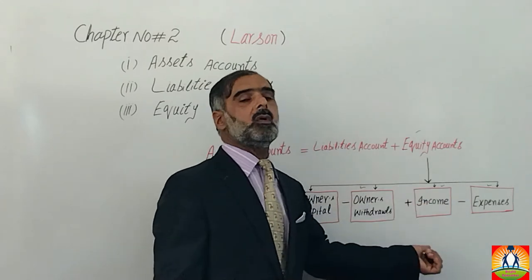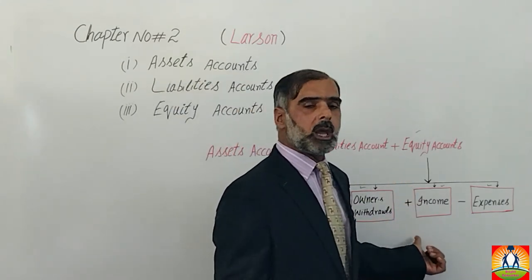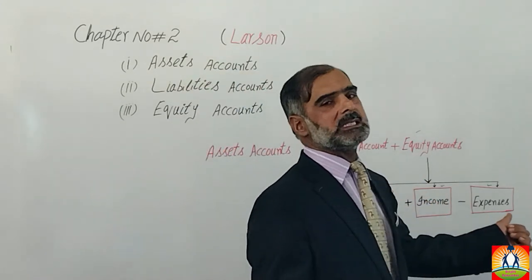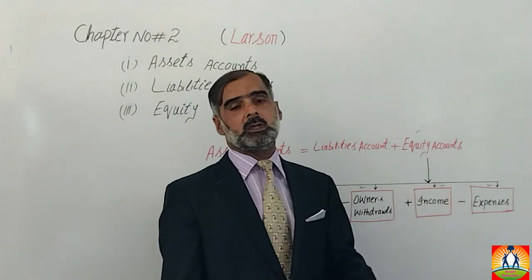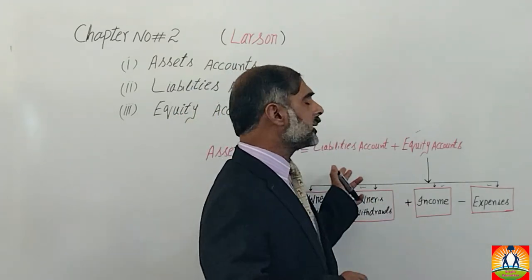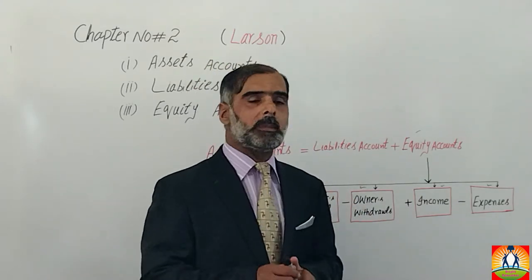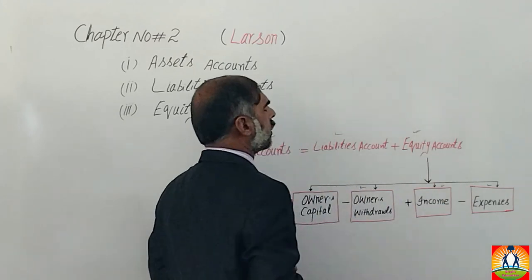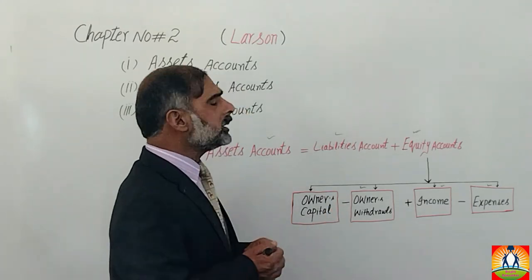We calculate the equity account amount. It is affected by withdrawals and income, which is added. If the expense of rent is paid, then we have debits and credits. This gives us the equity account amount. This is the accounting equation: assets equal to liabilities plus owner's equity.